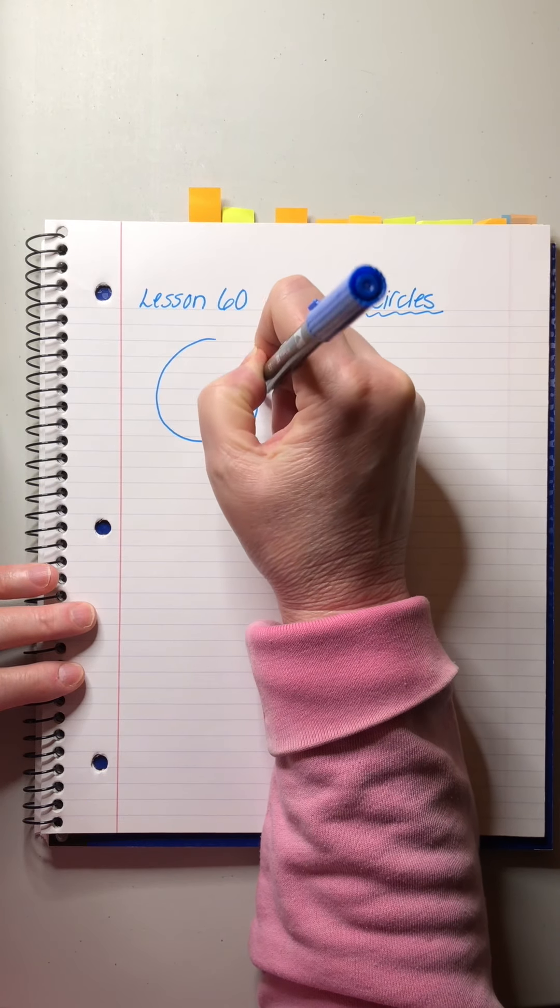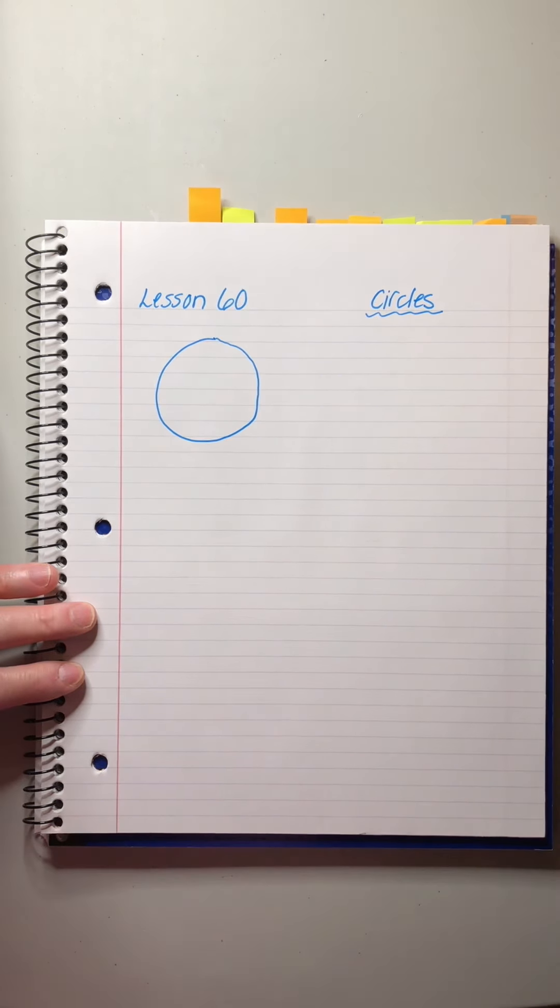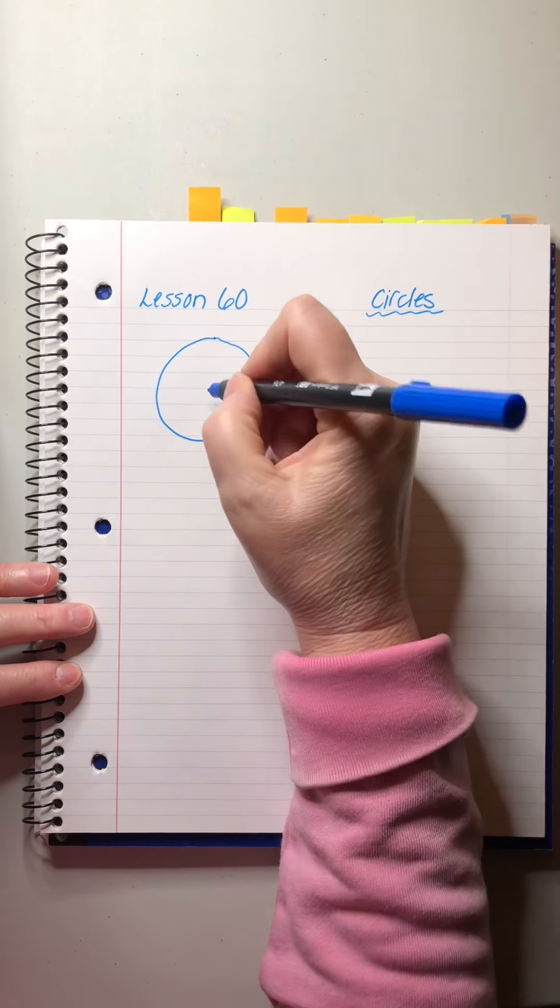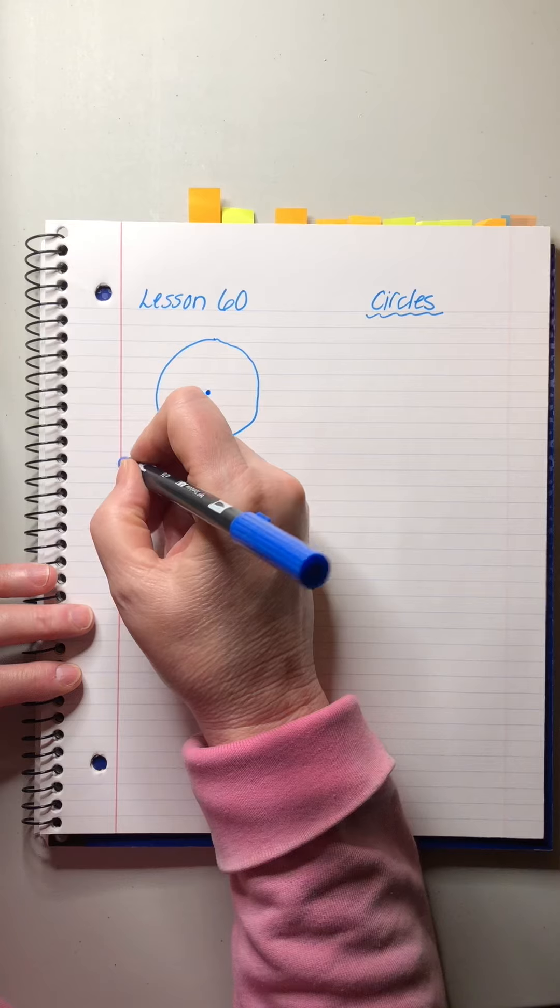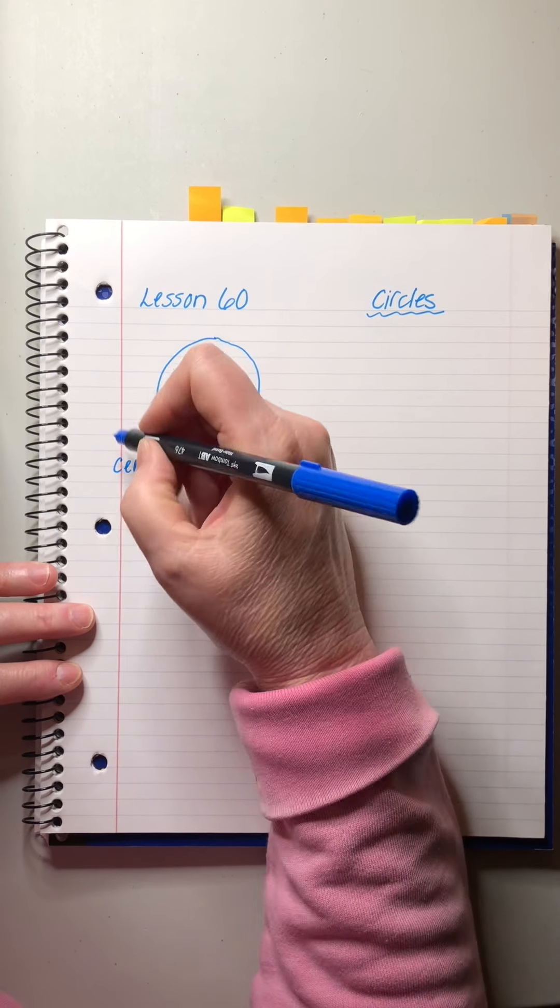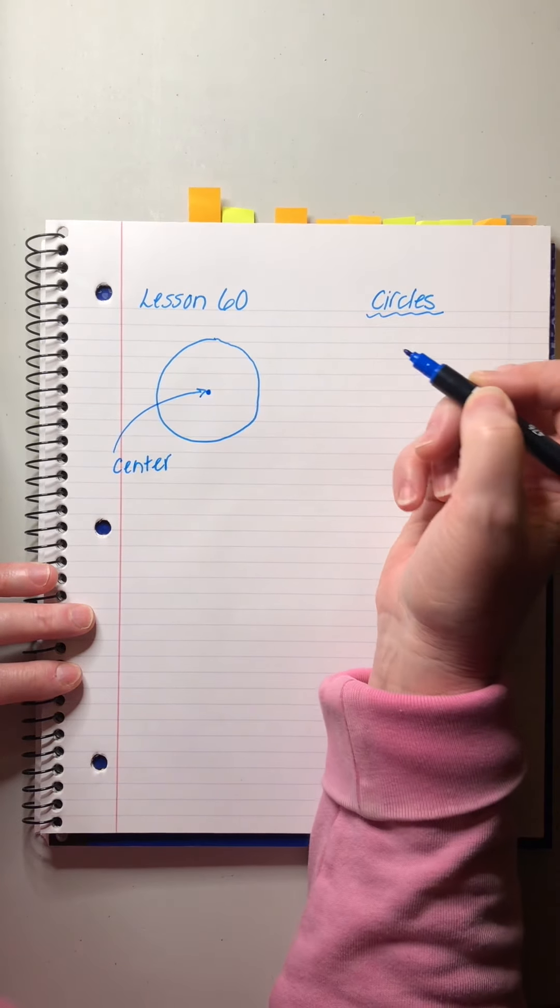Here's a circle. Pretend it's perfect. Okay, in a circle we have a center, always a center. Draw with me please. The center is pretty easy.